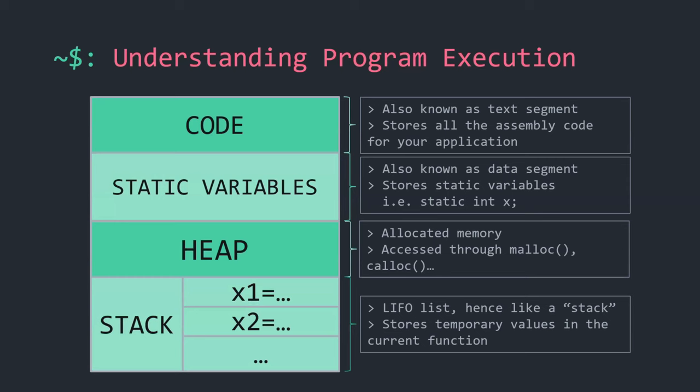This slide shows what the program memory looks like during execution. Online diagrams may show it flipped, but the idea is the same. There's a section where your code is stored — all your compiled assembly instructions. Next to it are sections for static variables, both initialized and uninitialized, in a data segment. Below that is the heap. We call it a heap because it doesn't work like a stack — when you specifically allocate memory for a variable, it goes in the heap.